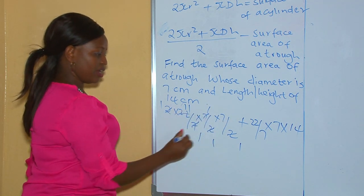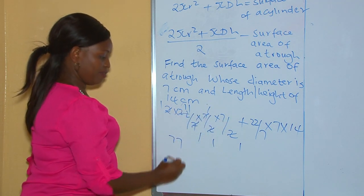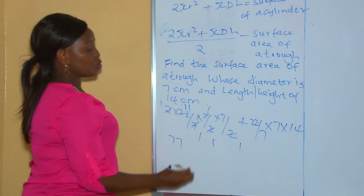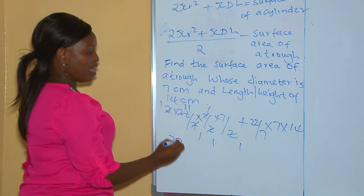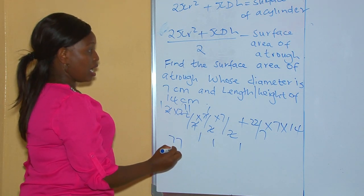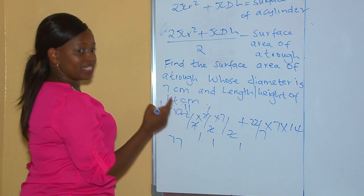11 times 7 is 77. So now we have our 2πr² part calculated.